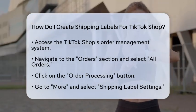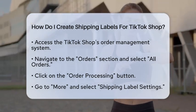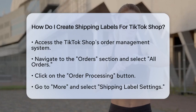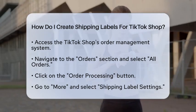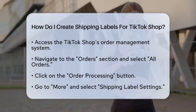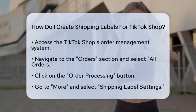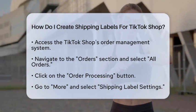Next, click on the Order Processing button. From there, navigate to More and then select Shipping Label Settings.